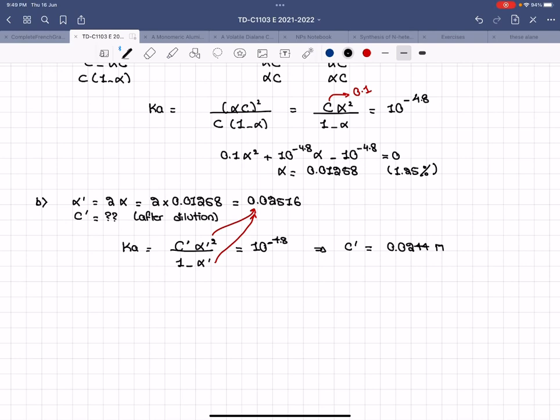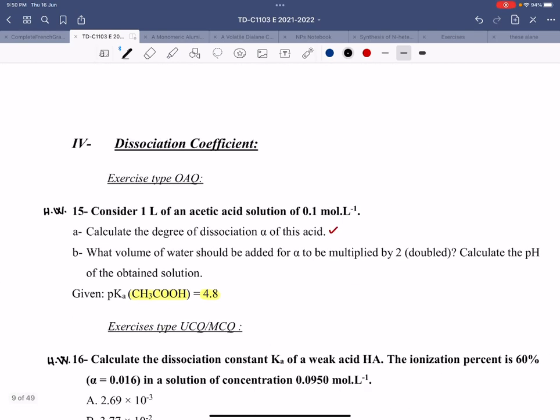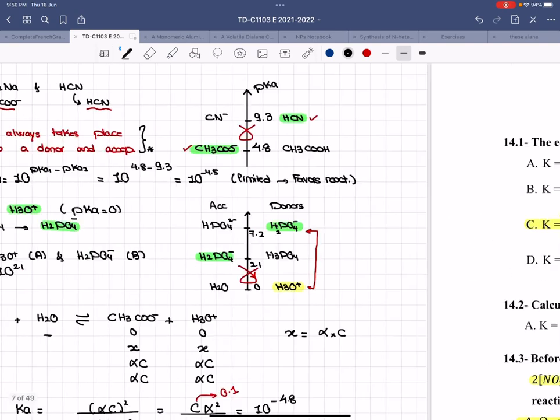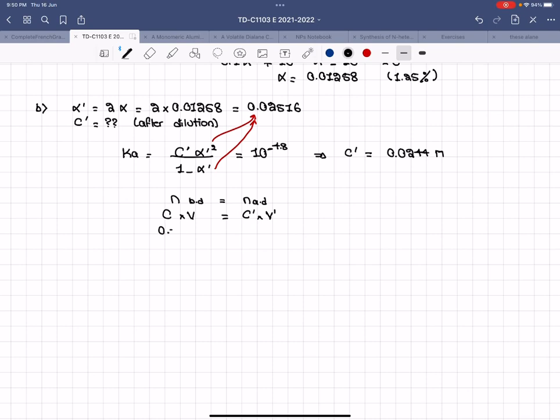You can start with the simplest thing, which is basically C equals C prime times the dilution factor, or number of mole before dilution equals number of mole after dilution. So this is C times V equals C prime times V prime. Initially it was 1 liter. So I have 0.1 times 1 liter equals C prime, which is 0.0244 times V prime. The volume after dilution will be approximately equal to 4 liters.